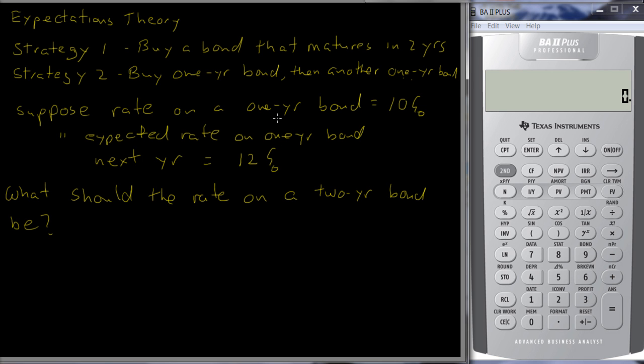If, for example, the two-year bond paid only 10%, who would buy it? You think rates are going to go up next year. So clearly you can see that it seems to be better to buy the two one-year bonds. On the other hand, if the two-year bond had an interest rate of 12%, what would happen? Everybody would want to buy the two-year bond. And so the demand for this would go up. The price would go up. And the yield would go down. So that would drive down the rate on the two-year bond.